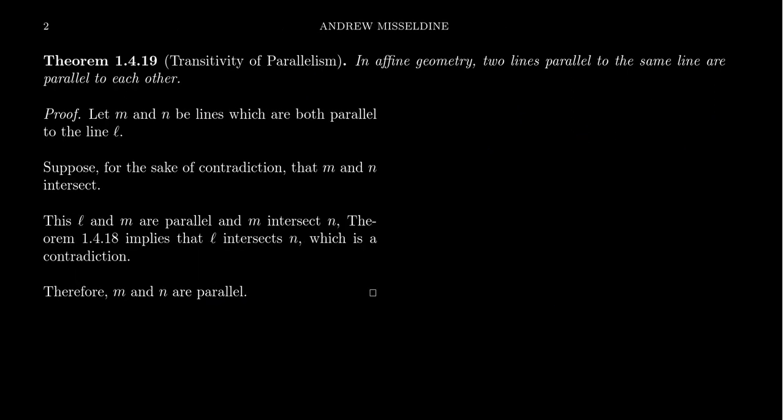Related to this is the transitivity of parallelism, which we explicitly proved for Young geometry, but that proof transfers immediately to affine geometry — we don't have to change it whatsoever, because this is a generalization. We have the four incidence axioms and the Euclidean parallel postulate. That's all we need.